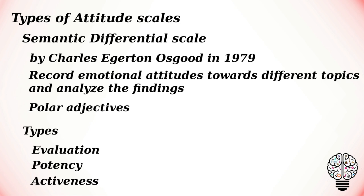Different types of semantic differential scales are evaluation, potency, and activeness. The first determines whether someone has a positive or negative opinion about a certain topic. The next determines how strong or weak a person's attitude towards something is. The last measures whether the topic is regarded as active or passive. The combination of these three scales can be used.